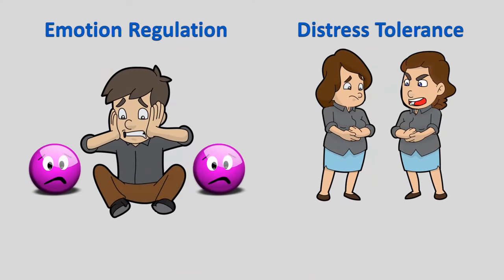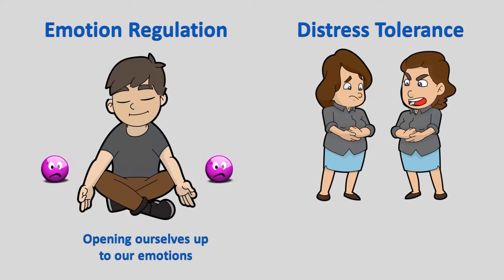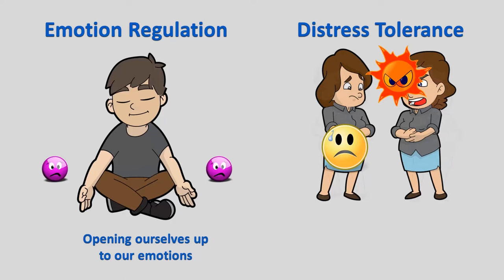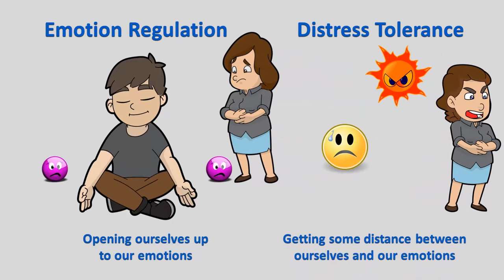With emotion regulation, we're opening ourselves up to our emotions and allowing ourselves to feel them, and as we give them some attention, they tend to subside and become less intense. Whereas with distress tolerance, we're doing things to temporarily avoid direct contact with our emotions by putting some distance between ourselves and any distressing emotions that we feel until things have a chance to cool down.